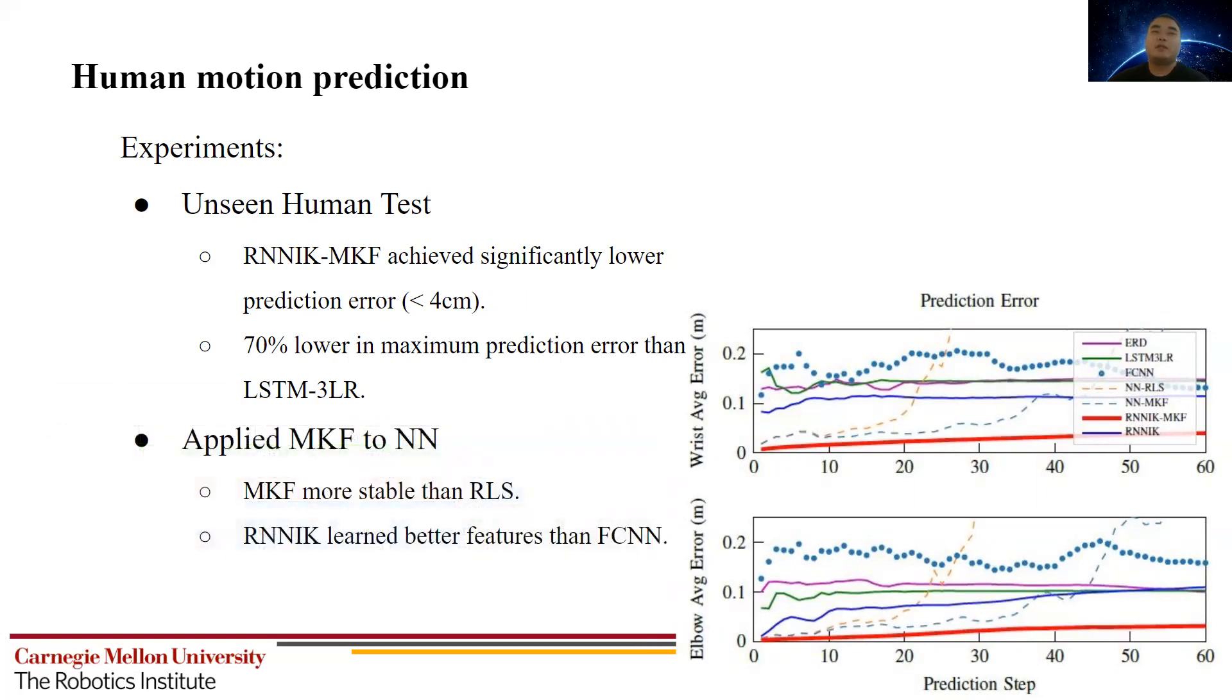We also applied MKF to fully connected neural networks to directly compare recursive least square and MKF. From the orange and blue dashed lines, we see MKF kept the error stable for longer steps. This indicates that first, MKF tends to be more stable than recursive least square in the human motion prediction context. And second, our model learned better features than fully connected neural networks.